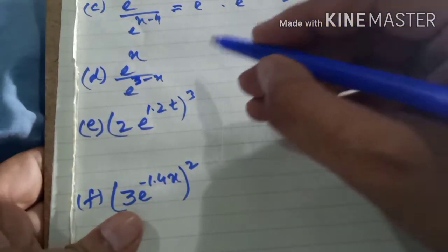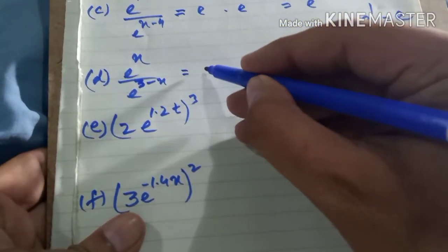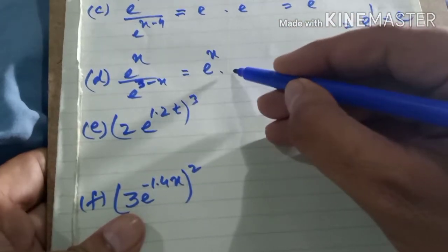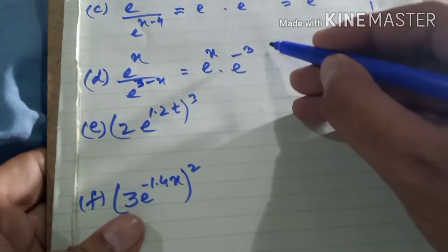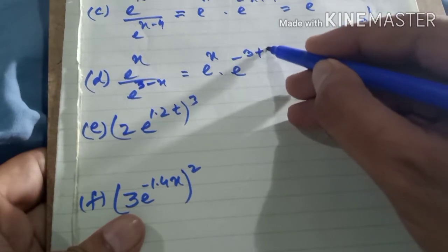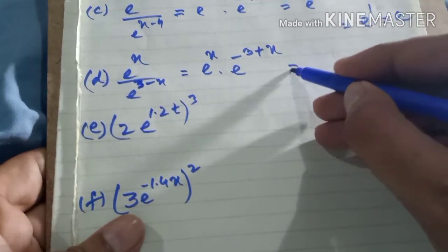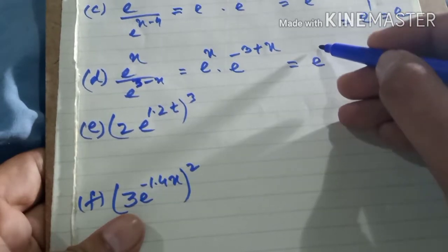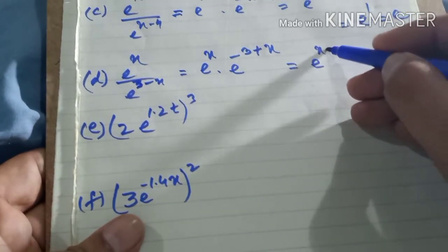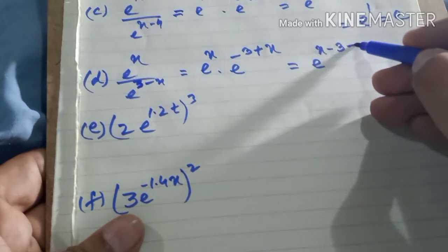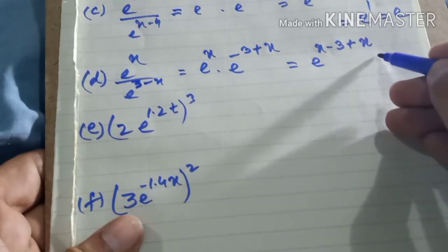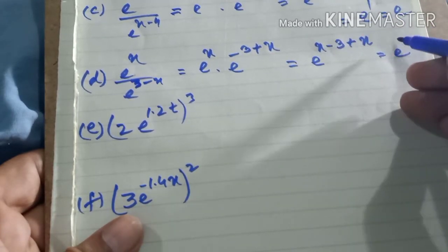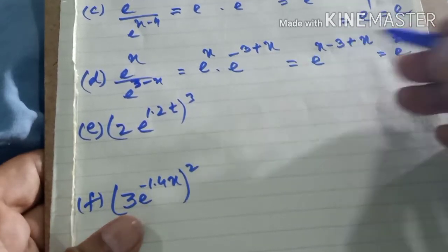Part d: e^x divided by e^(x−3). The denominator comes up as e^(−x+3). Bases are the same, so powers add: x + (−x + 3) — wait, combining: x + (3 − x). Result: e^(2x−3).